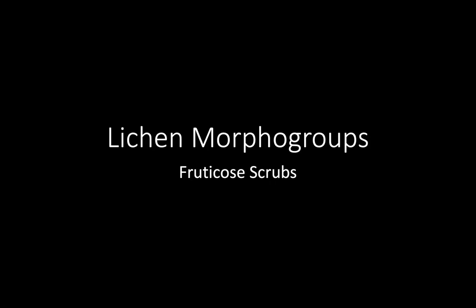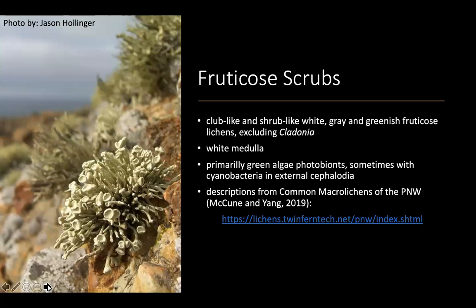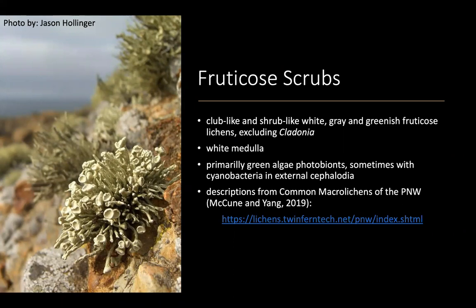Today's lichen morpho group is the fruticose scrubs. These are club and shrub-like white, gray, and greenish-gray fruticose lichens, excluding the cladonias. We'll get to the cladonias later when we get to the clad group. These lichens have a white medulla, primarily green algae photobionts, sometimes with cyanobacteria and external cephalodia. Some of the descriptions used are from Common Macrolichens of the Pacific Northwest, McCune and Yang 2019.